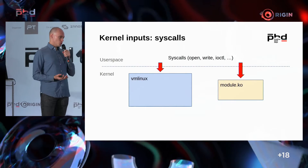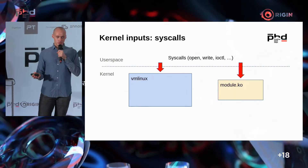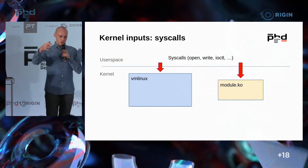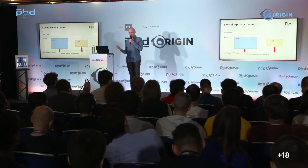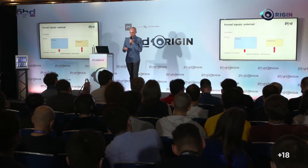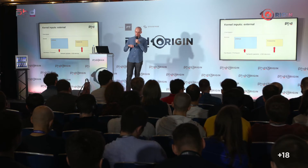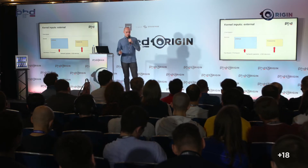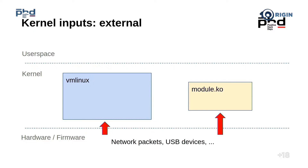About the inputs — until now we've been discussing kernel inputs as syscalls. But since the kernel is a layer between hardware and user space, it also has inputs from the hardware side. We can fuzz these inputs as well — from the network, from USB, and even other protocols like Bluetooth, NFC, and mobile protocols. It all goes through the hardware and sooner or later gets into the kernel.